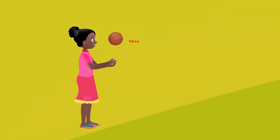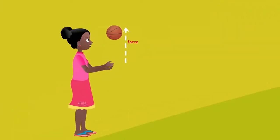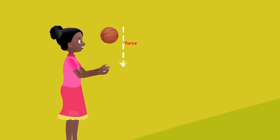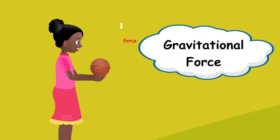When a ball is thrown up, the speed at which it falls down is due to gravitational force.